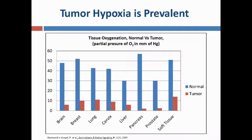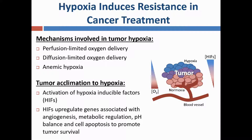Tumor hypoxia is prevalent to some degree in most solid tumors. The data on this slide demonstrates the collective results of 125 clinical studies that show the hypoxic state of varying types of solid tumors. There are several mechanisms involved in the development of hypoxia in tumors. The figure in this slide demonstrates an example of diffusion-limited oxygen delivery, in which the cells in the periphery of the tumor are further from the vascular supply and are thus hypoxic.